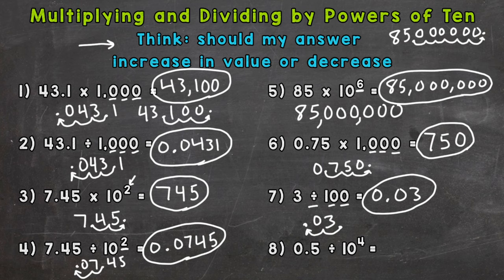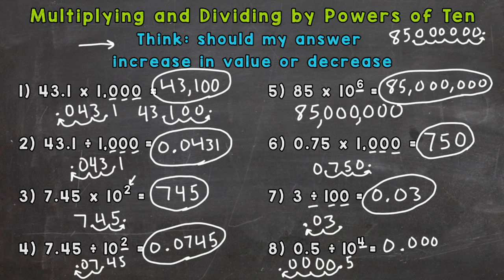Lastly, number 8 — 5 tenths divided by 10 to the fourth power. Our power of 10 is in exponential form, so we look at the exponent of 4. That means we move the decimal four times to push everything to the correct place. We're dividing, so we decrease the value and move it to the left four times: 1, 2, 3, 4 — filling with zeros. Counting the place values: tenths, hundredths, thousandths, ten-thousandths, hundred-thousandths — so five hundred-thousandths is our answer.